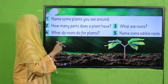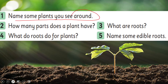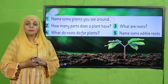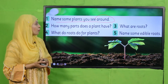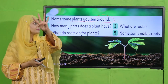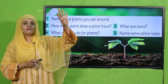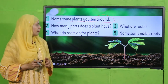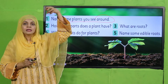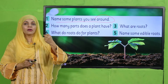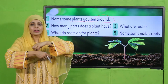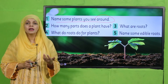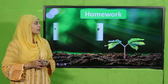Now is the time for evaluation. Name some plants that you see around you — aloe vera, money plant, rose plant, neem, eucalyptus. How many parts does a plant have? Four parts — roots, stem, leaf, and flower. Very good! What are roots? Roots are the underground part of the plant — zameen ke niche ka hissa. What do roots do? They absorb water — paani ko kheenchti hain. They hold the plant in place — anchor karti hain. Name some edible roots — radish, carrots, turnips.